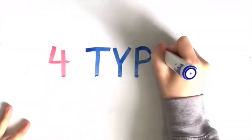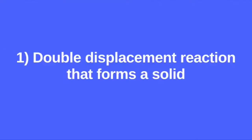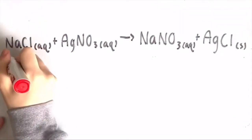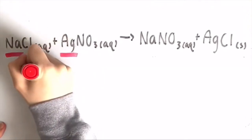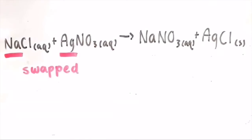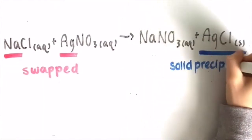There are four types of double displacement reactions. Firstly, we have a double displacement reaction that forms a solid. The solid in this reaction is usually a solid precipitate. An example would be sodium chloride plus silver nitrate yields sodium nitrate plus silver chloride. Sodium and silver are our cations because they swapped places, and the solid precipitate formed was silver chloride.